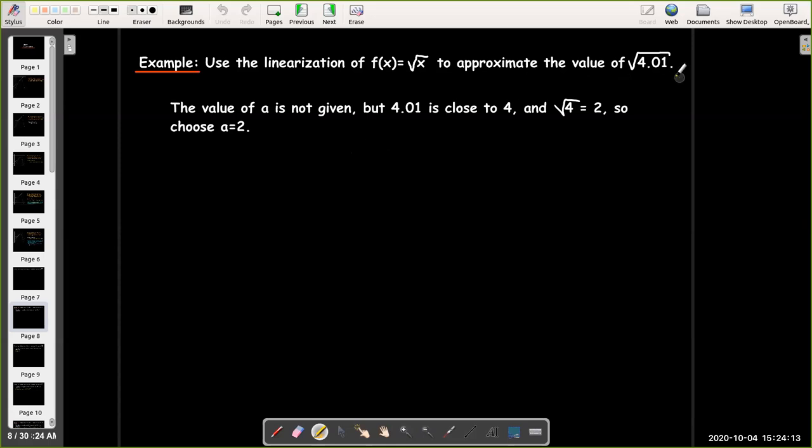But since I'm calculating the square root of 4.01, a natural choice of a would be 4.